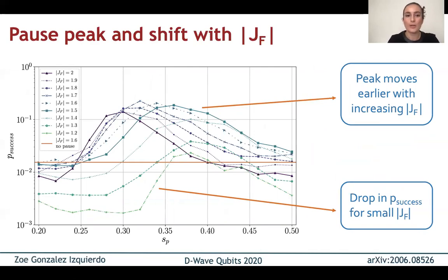And what happens is that, as we increase J Ferro, the peak in the probability of success due to the pause shifts earlier in the anneal. This is because when J Ferro increases, the total energy also does, which makes the minimum gap shift earlier. And because the optimal pause location happens shortly after the minimum gap, that shift is going to affect it as well. We can also see that for small J Ferro, we see a drop in probability of success, which is what also happened when we didn't have a pause.